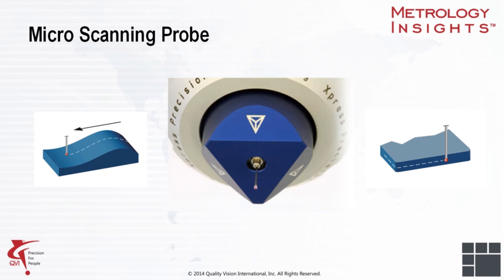For measuring surface contours or profiles on microparts, a micro scanning probe has a 50 micron styli and a length of up to 25 millimeters. It has one gram of contact force and is capable of scanning surfaces or measuring single points.